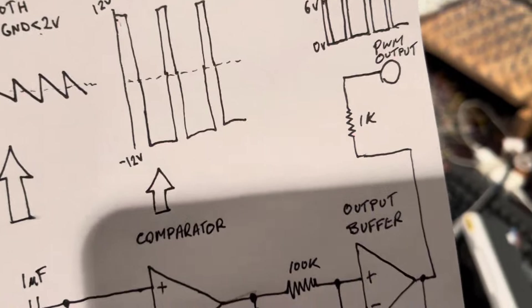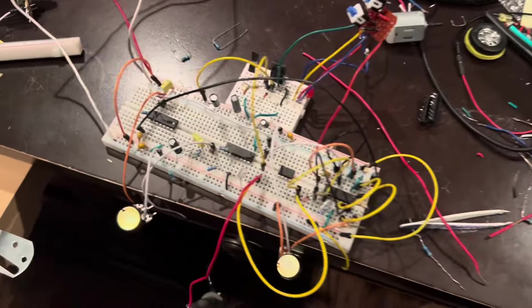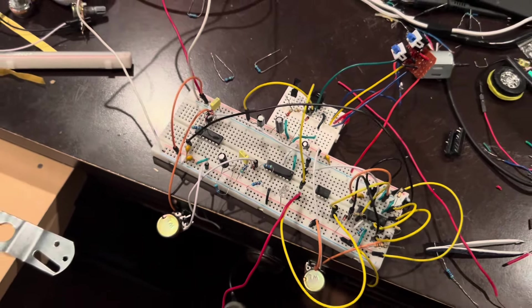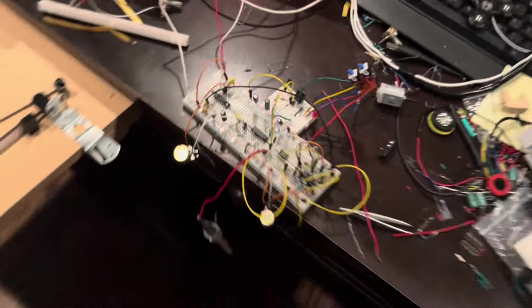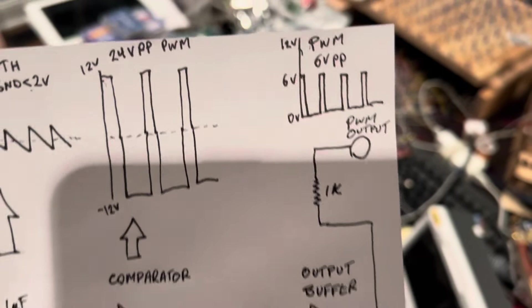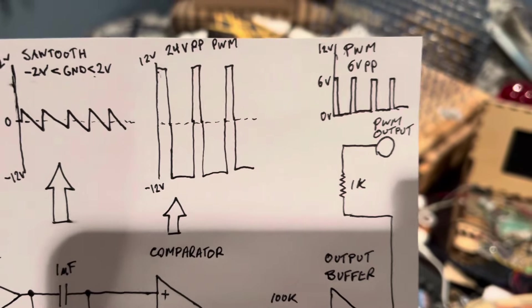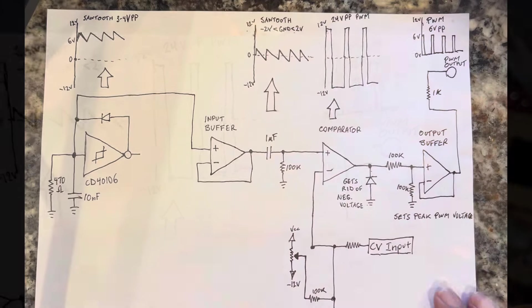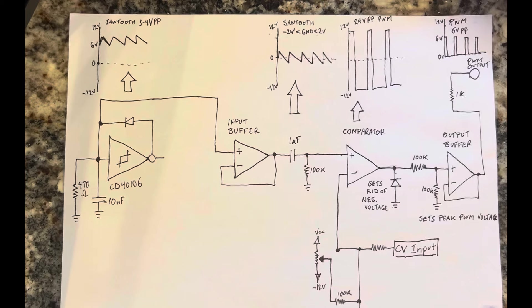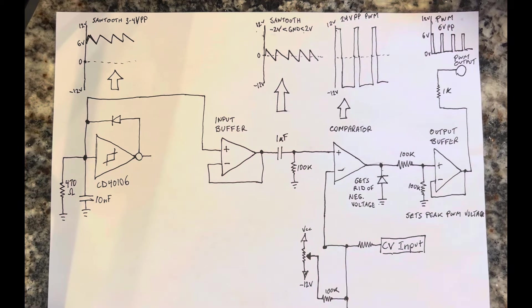So now I took that circuit, which is here, and I put it to the gate of a MOSFET. That's the PWM output going to the gate of a MOSFET, and so now we'll see how well that works.